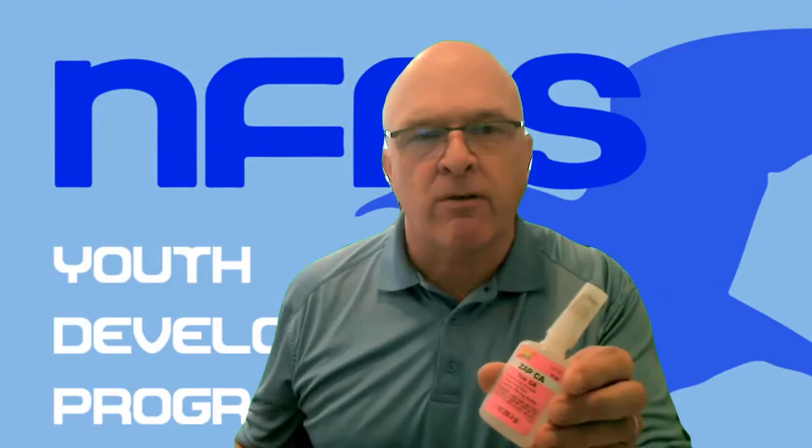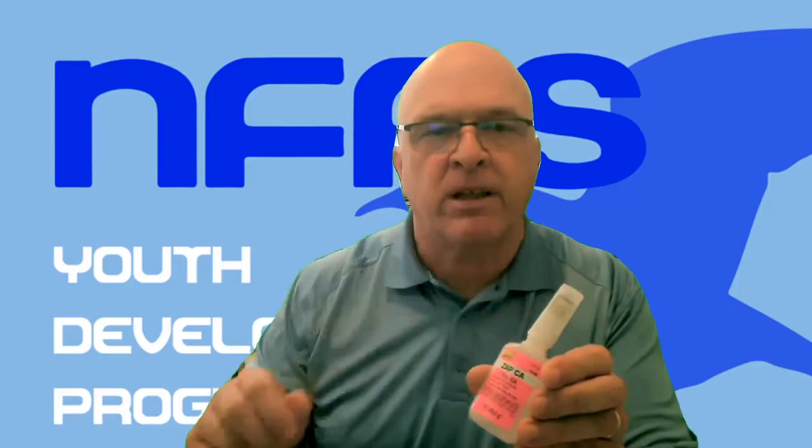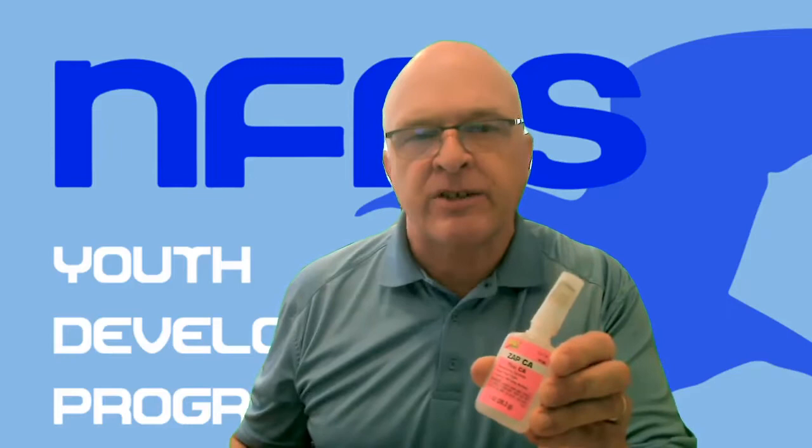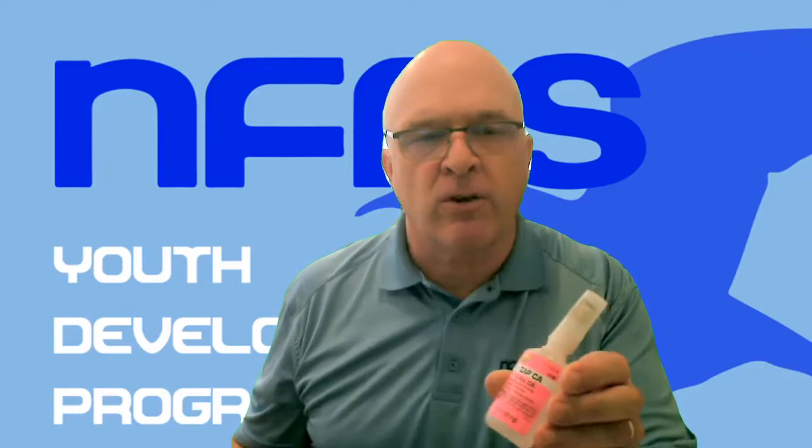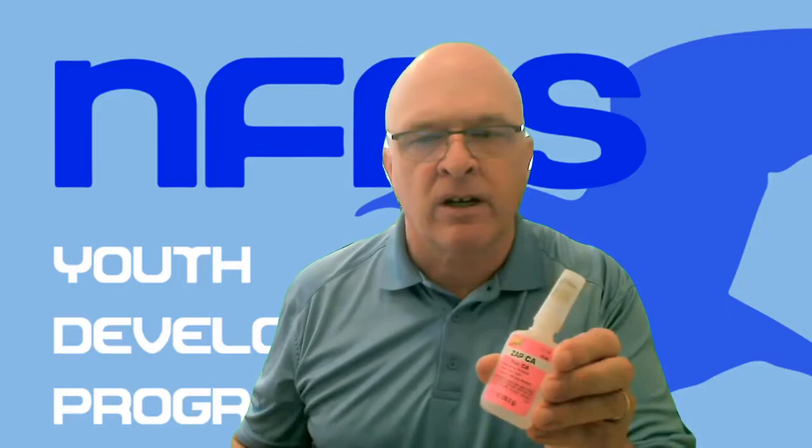So let's look at application of the glues, starting with the thin CA. One of the things about these glues is you never want to apply the glue directly from the bottle. Even with a small capillary tip on the bottle, it's impossible to control the flow of the glue to the extent necessary to keep your weight under control on an indoor model. Therefore, you want to put some glue on some wax paper or some plastic and use a tool to apply the glue. We'll show you that in just a minute.